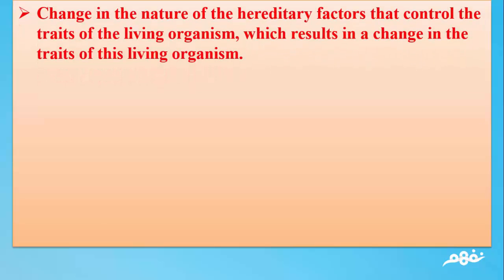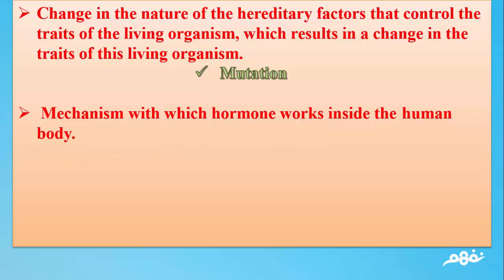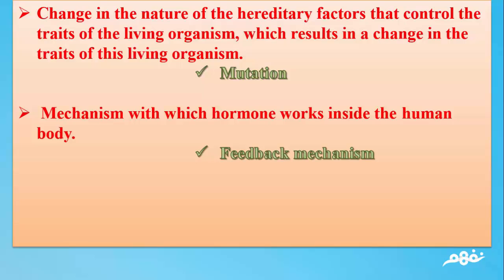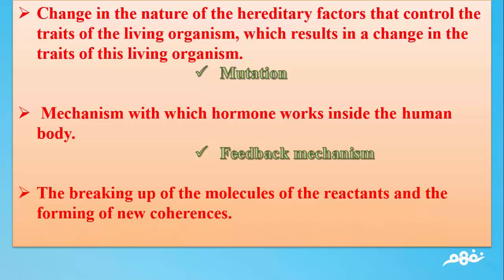Number 4: Change in the nature of the hereditary factors that control the traits of the living organism, which results in a change in the traits of this living organism. The answer: Mutation. Number 5: Mechanism with which a hormone works inside the human body. The answer: Feedback mechanism. Number 6: The breaking up of the molecules of the reactants and the forming of new coherences. The answer: Chemical reaction.